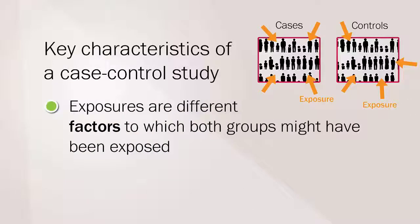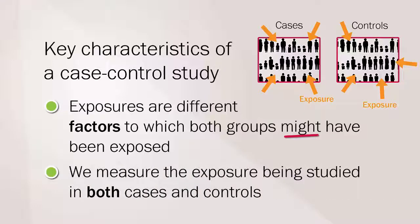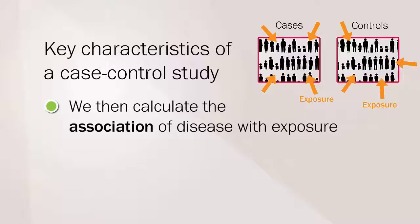Exposures are the different factors such as smoking or sunlight to which both groups might have been exposed. We measure the exposure being studied in both the cases and controls. We then calculate the association of the disease with the exposure to see if the cases have been more exposed than the controls. This measure is called the odds ratio.